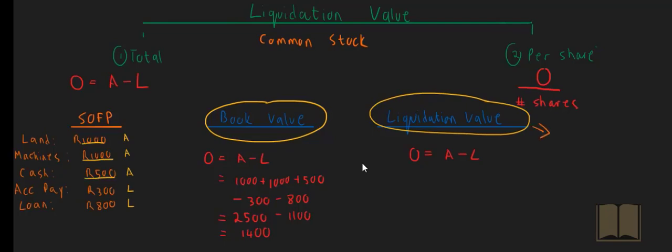The liquidation value, on the other hand, doesn't take the values of the assets as they are in the books. It looks at the market value of the assets. If the company had to be liquidated now, how much could these assets be sold for? What is the market value, the liquidation value of those assets?